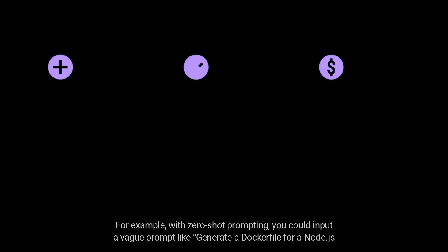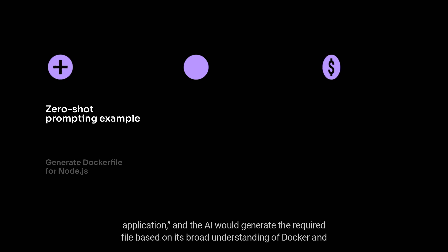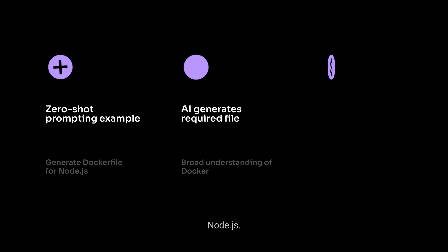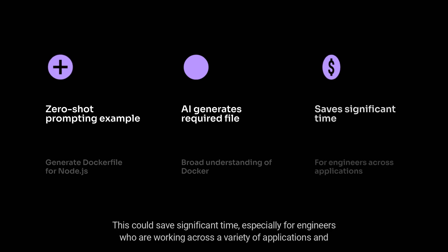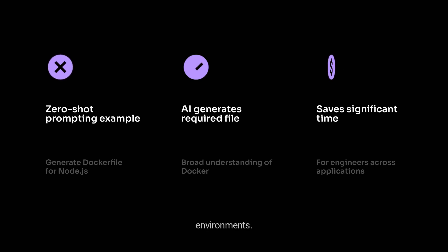For example, with Zero-shot Prompting, you could input a vague prompt like "generate a Dockerfile for a Node.js application" and the AI would generate the required file based on its broad understanding of Docker and Node.js. This could save significant time, especially for engineers who are working across a variety of applications and environments.